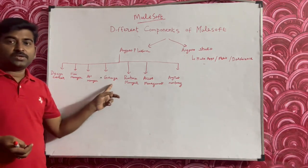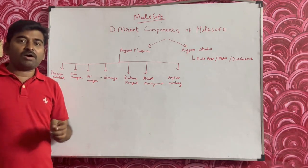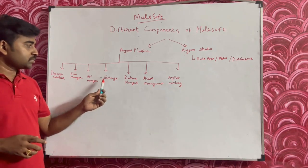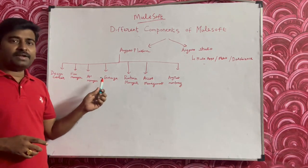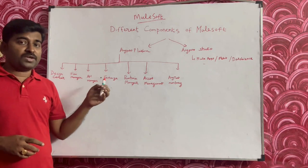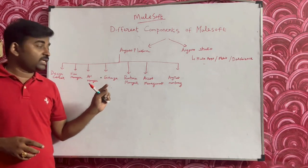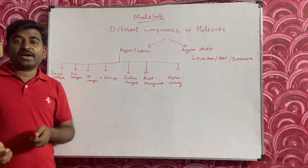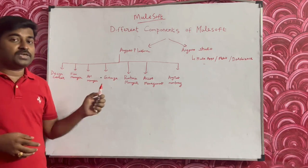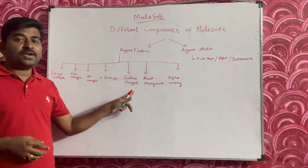Exchange is basically a repository where you can store all your assets, mainly your APIs. It acts as a catalog where you can see all available APIs. Every developer in the organization can be given access to Exchange, so they can discover what APIs are available and consume the data.